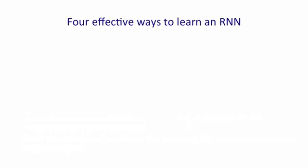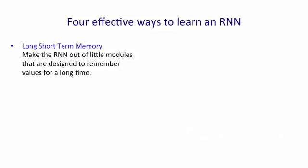It turns out there's at least four effective ways to learn a recurrent neural network. The first is a method called long-short-term memory, and I'll talk about that more in this lecture. The idea is we actually change the architecture of the neural network to make it good at remembering things.